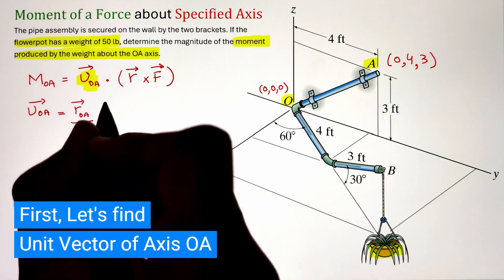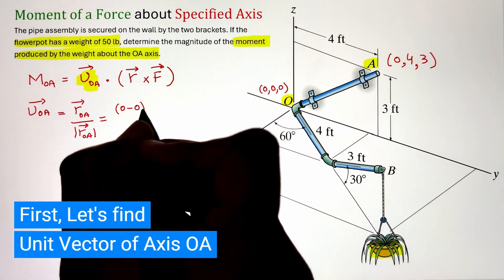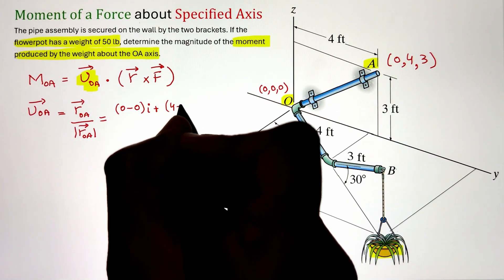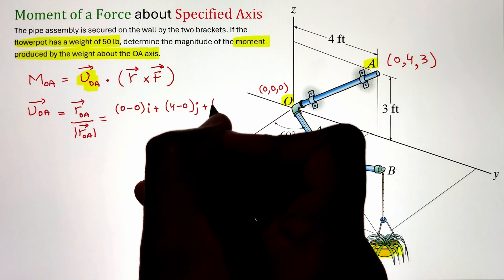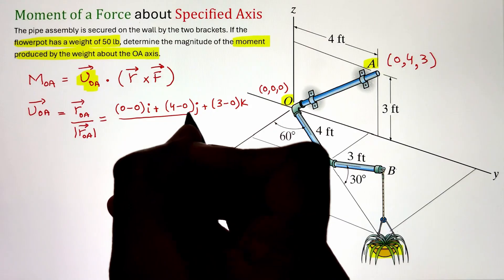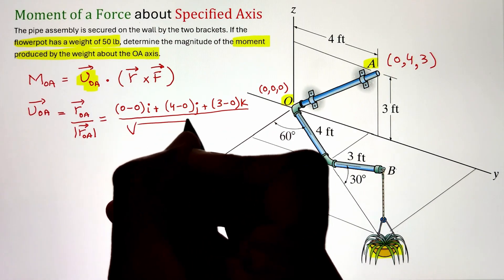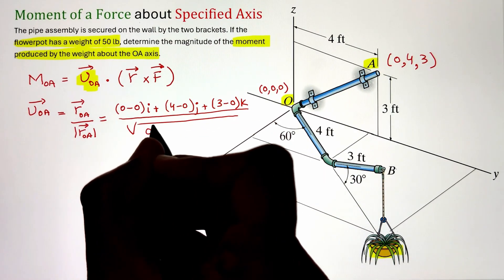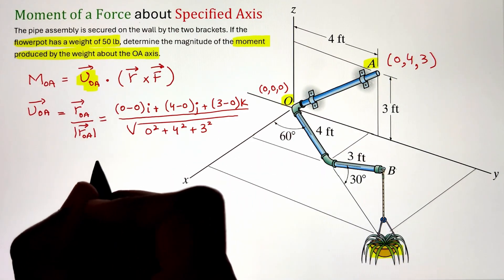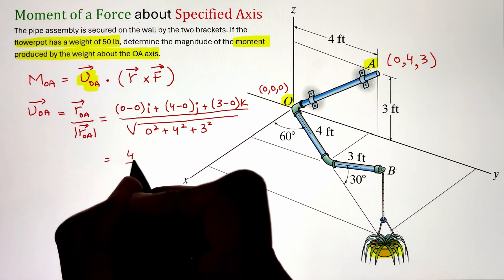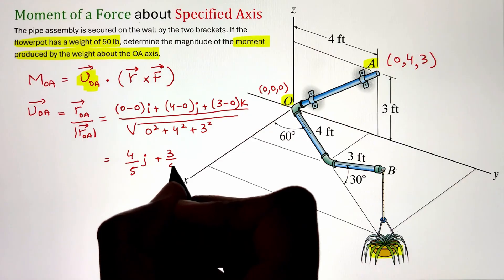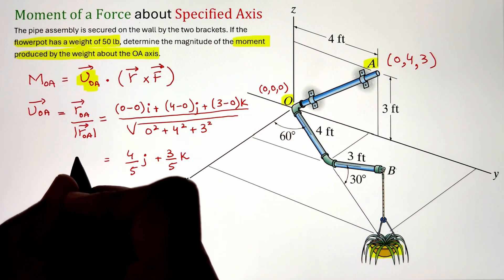So our X component of point A is 0 whereas I have a movement of 4 feet along the Y axis and 3 feet up along the Z axis. Now we can calculate the position vector by doing head minus tail. Since the position vector is directed from point O to point A we can subtract the point coordinates of A from O. Dividing that with the magnitude of the position vector gives us our unit vector. In this case it is 4 over 5 J plus 3 over 5 K.